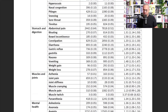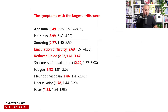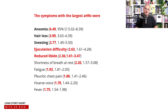In summary, the key red flags during the acute infection pointing toward long COVID risk are: anosmia, hair loss, sneezing, ejaculation difficulty, and reduced libido, as well as shortness of breath at rest, fatigue, pleuritic chest pain, hoarseness of voice, and fever. Thank you for joining this discussion — stay safe, happy, and healthy.